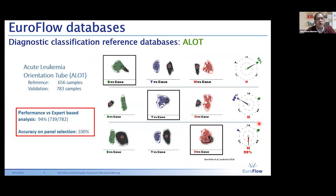The next example is one of the diagnostic databases for the ALOT — the Acute Leukemia Orientation Tube — in which the reference database was built with more than 650 samples and validated with an even higher number of disease samples. Here, as you can imagine, the reference files are built upon disease samples. The summary of results obtained with this validation is that we had concordance with the expert in more than 90% of cases, and accuracy on panel selection of 100%. Remember that this is an orientation tube meant to orientate on what set of markers you should use afterwards to optimize all your diagnostic strategies.